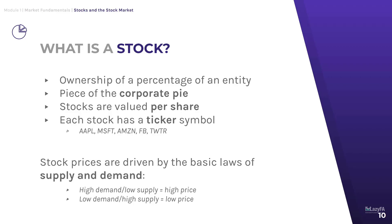If you look at the slide, you'll see some names you probably recognize — Apple, Microsoft, Amazon, Facebook, Twitter. Every single stock has its own unique ticker symbol, and that's how it is uniquely identified on the stock exchanges. When you're researching potential investments, a good place to start for basic information about a company and to find its ticker symbol is on the company website, or you can simply Google for it.